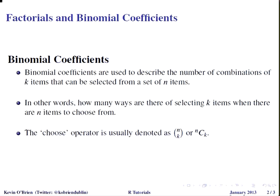In other words, how many ways are there of selecting k items when there are n to choose from? For example, how many ways are there of picking 2 items when you have 6 to choose from? Now the choose operator is usually how we might describe this. It's the operator for computing binomial coefficients. So we might compute it as denoted like this or like this.